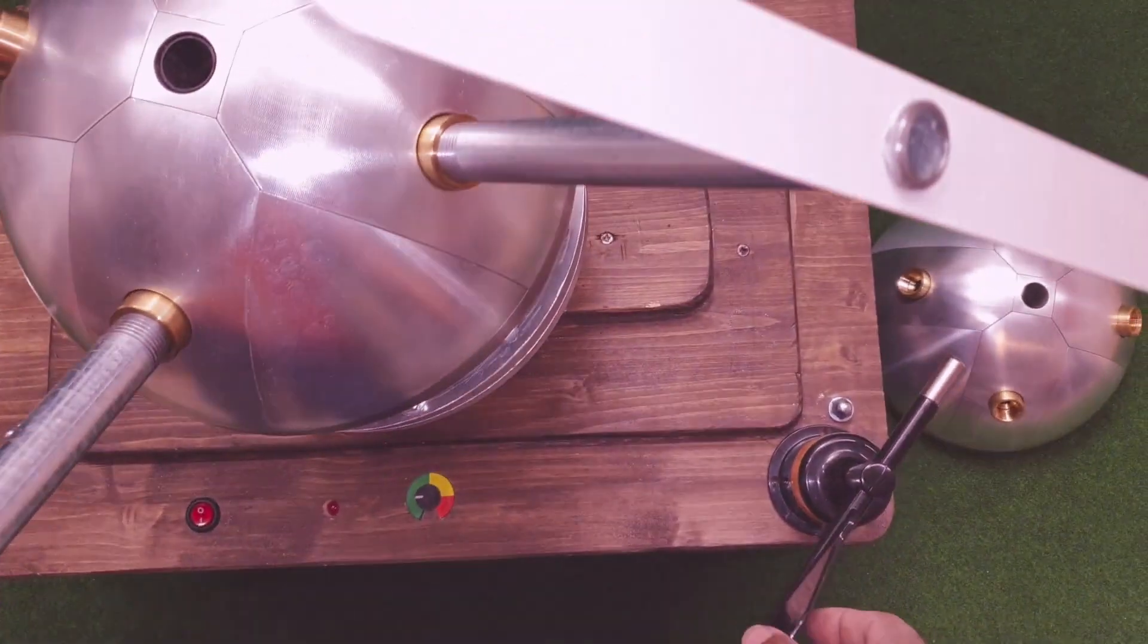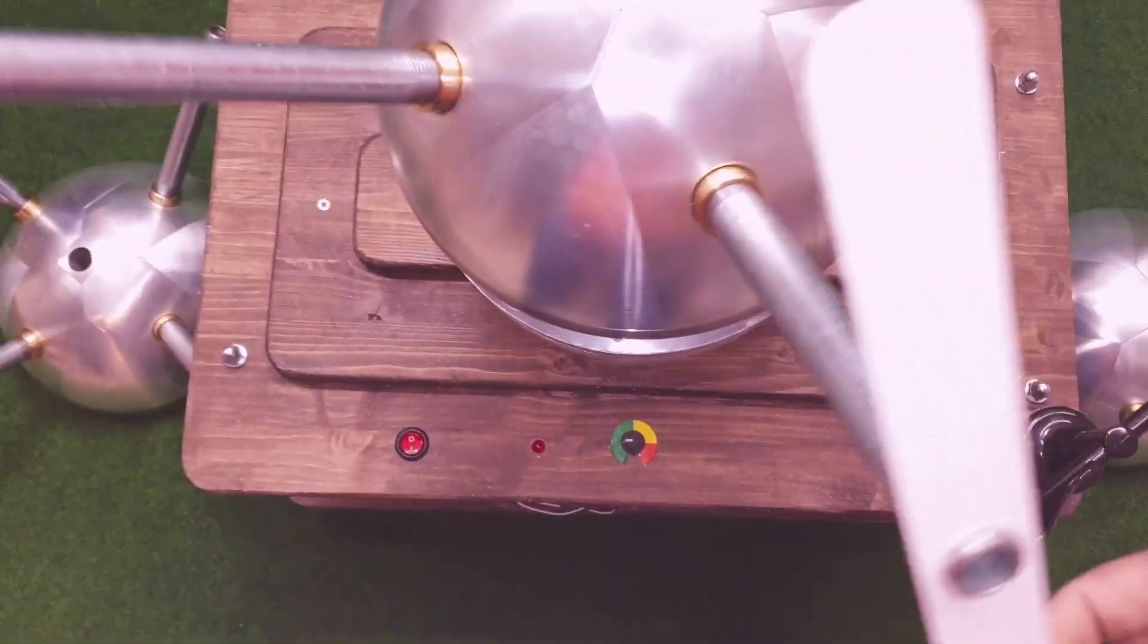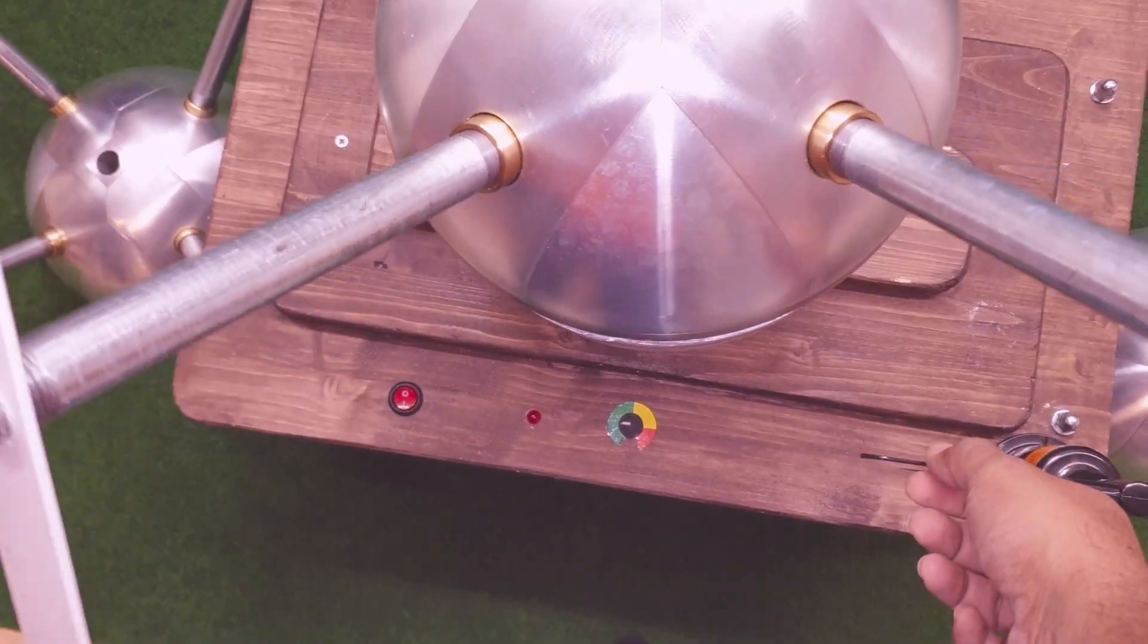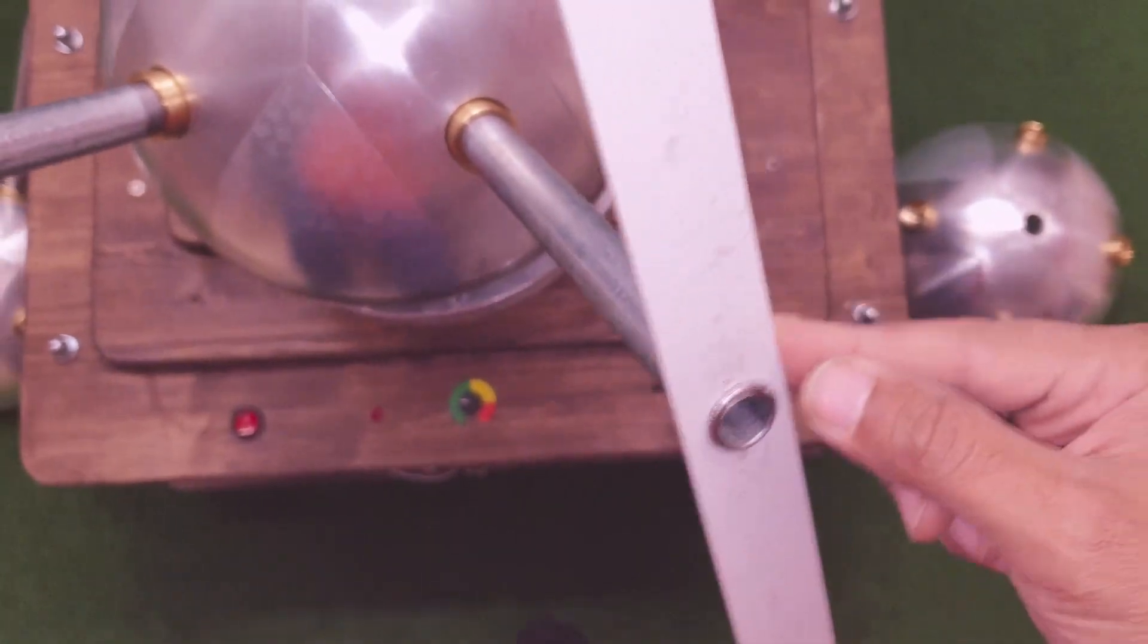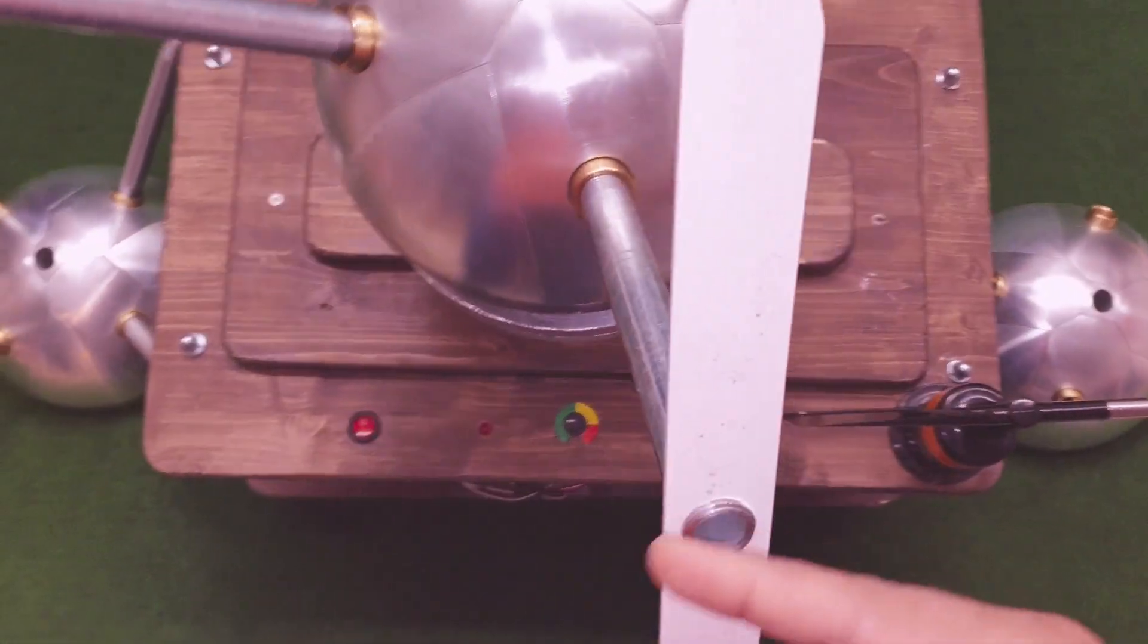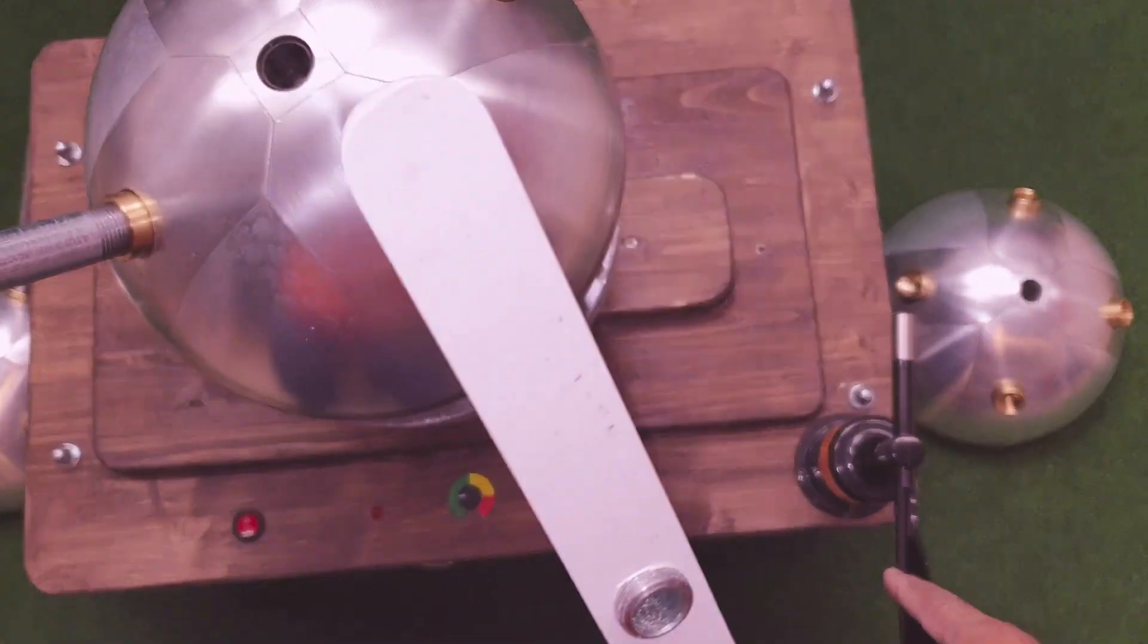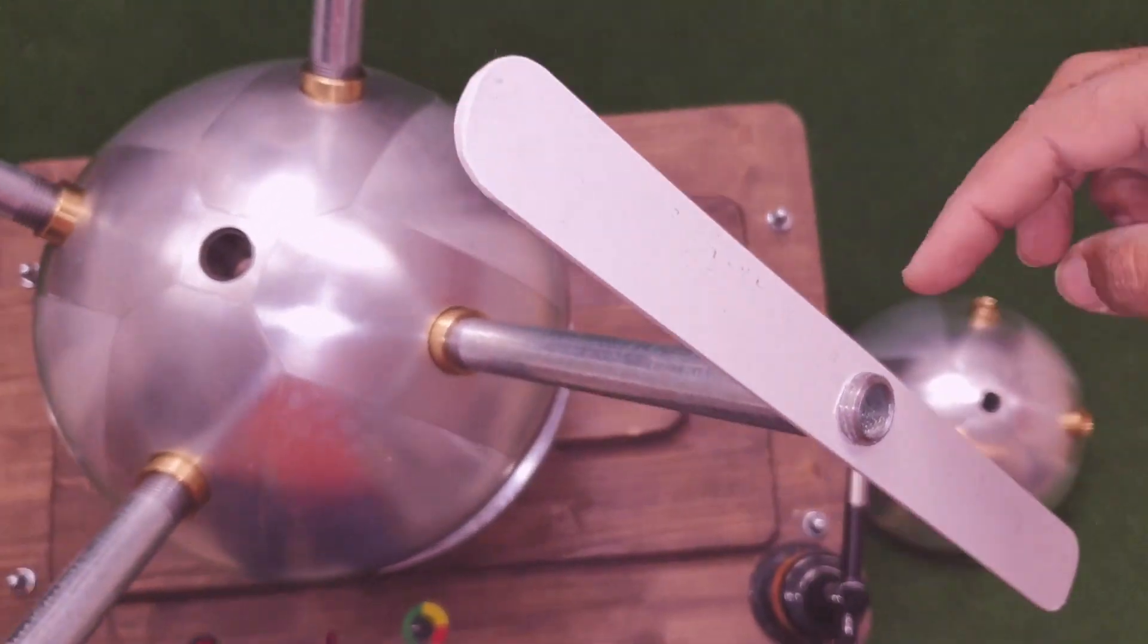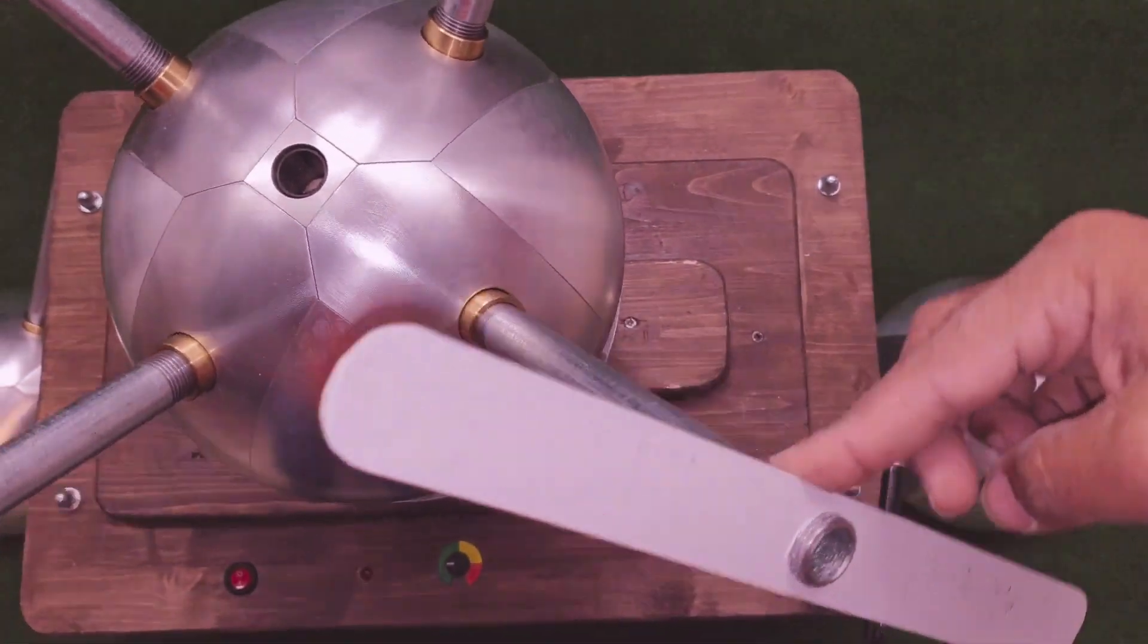Say for example it turns 90 degrees. The wind will push in this direction, and all the blades will be aligned accordingly. Now the wind will push in this direction.